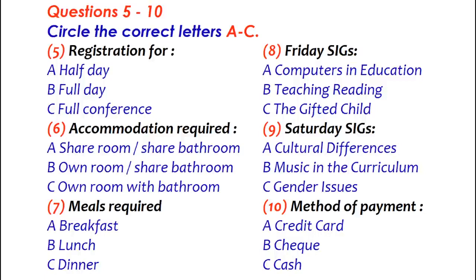Perfectly OK. Now, a couple of other things. There are a number of special interest groups organised. They're known as SIGs, and you're asked to nominate your preference. They'll take place on the Friday afternoon and Saturday morning, but they're filling up quickly. On Friday, you have a choice between computers in education or teaching reading skills, or a session on catering for the gifted child. Technology in the classroom is really my area of interest, rather than reading. So, I'll go for that. I can probably read up on the gifted child topic myself.